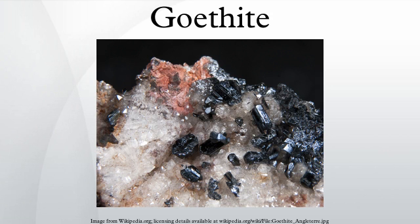The boxworks or gossan resulting from the oxidation of sulfide ore deposits is formed of goethite along with other iron oxides and quartz. Significant deposits of goethite are found in England, Australia, Cuba, and in Michigan, Minnesota, Missouri, Colorado, Alabama, Georgia, Virginia, and Tennessee in the United States.